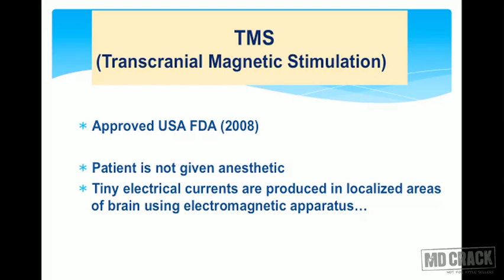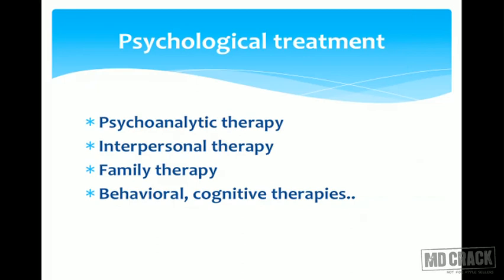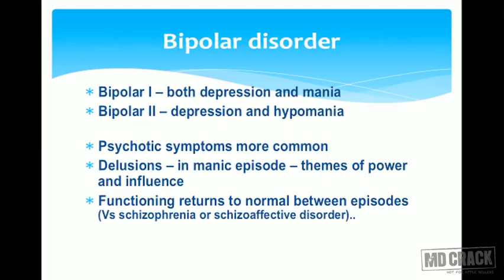TMS — transcranial magnetic stimulation — was approved by the US FDA in 2008. Unlike ECT, no anesthetic is required; tiny electrical currents are produced in localized brain areas using electromagnetic apparatus. Psychological treatments for depression include psychoanalytic therapy, interpersonal therapy, family therapy, and behavioral and cognitive therapies.